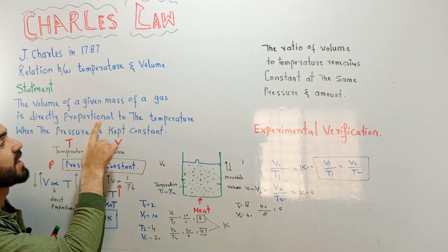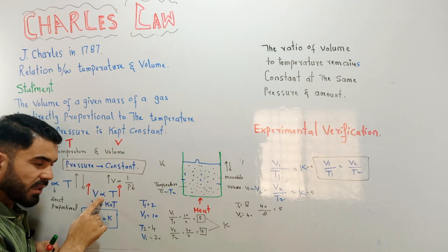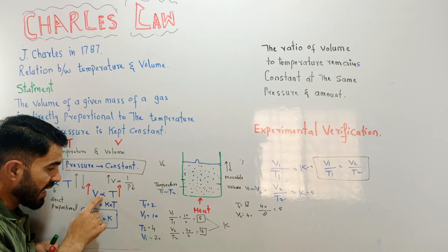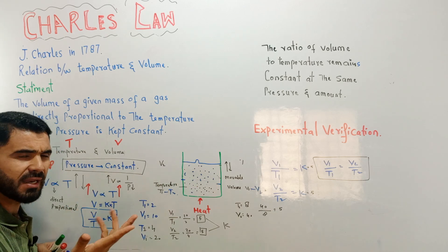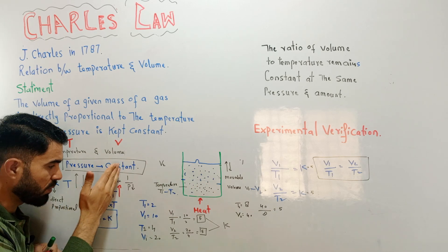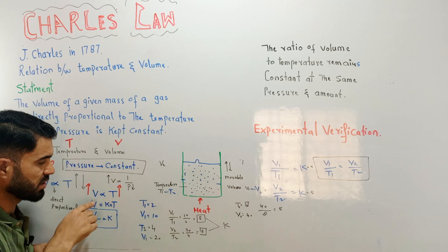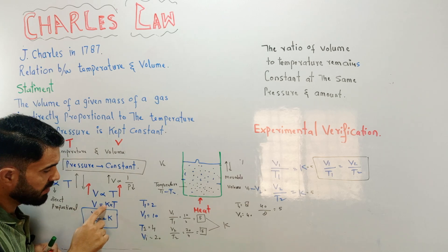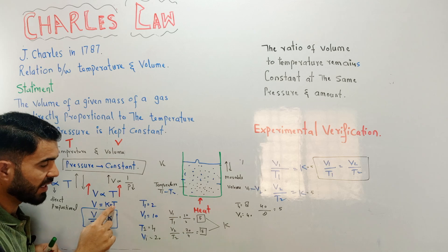This is called direct proportion. Volume is directly proportional to temperature — not inversely proportional. Direct proportion means if one thing increases, the second also increases; if one parameter decreases, the other also decreases. If you remove the proportionality sign, you get a constant K, so V is equal to K times T.